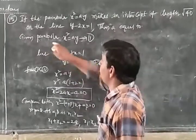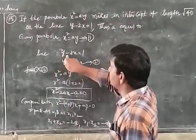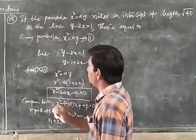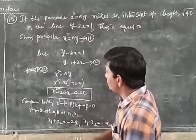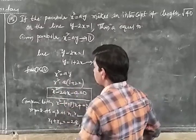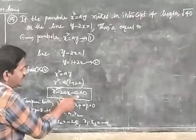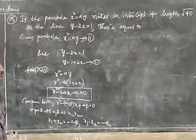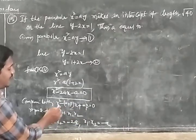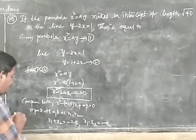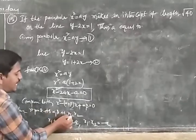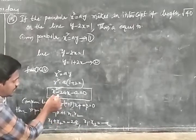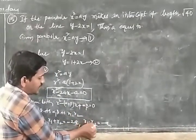Given parabola x² = ay, line y = 1 + 2x substituted gives x² = a(1 + 2x), i.e., x² − 2ax − a = 0. Using sum and product of roots: x₁ + x₂ = 2a, x₁x₂ = −a.